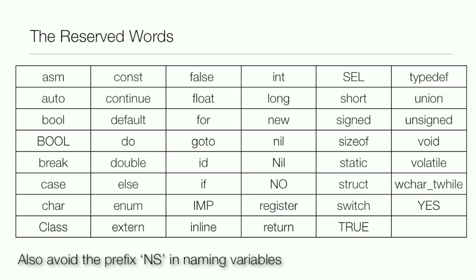Also, never use a prefix NS to name anything. So never name it NS tax rate because that'll just totally screw up Objective C, won't know what to do because NS is a very vital prefix in Objective C. So that's all for this lesson.